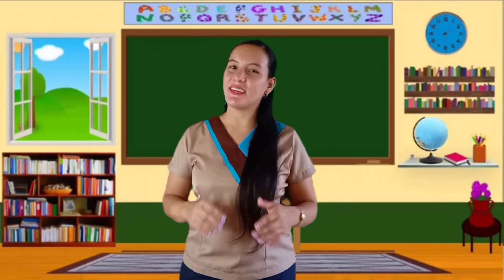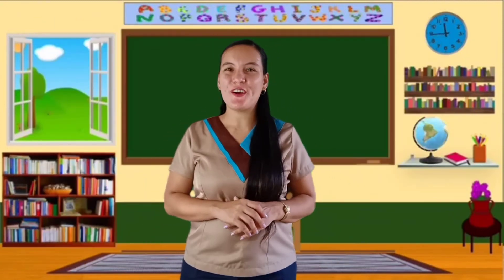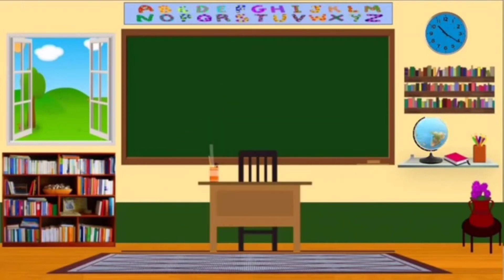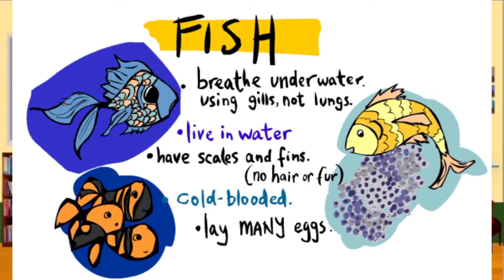Examples of fish are shark, tuna, mackerel, and swordfish. Let us read all together the characteristics of fish: Fish breathe underwater using gills. They live in water. They have scales and fins. Fish lay many eggs.